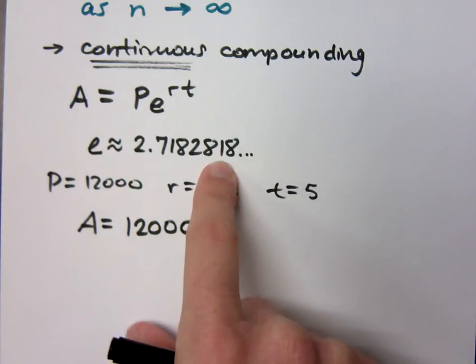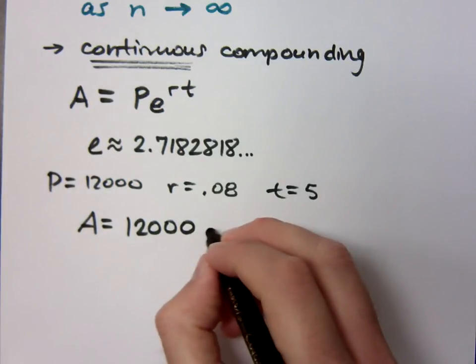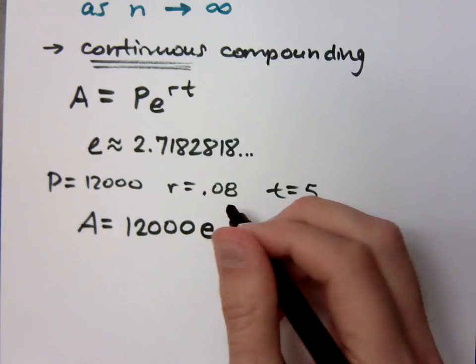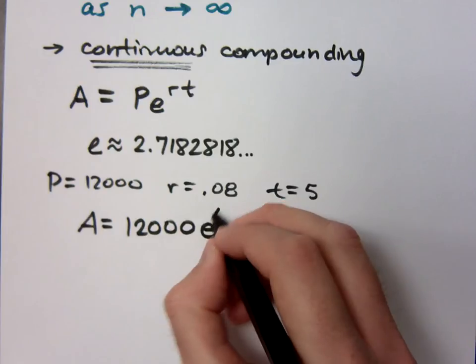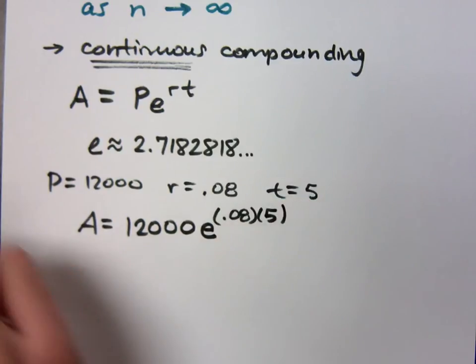Once you go beyond this, it doesn't keep that same pattern. For a little bit here, it looks like it's repeating, but then after that, it just all... Just forget about it. So, this is 12,000e raised to the 0.08 times 5.